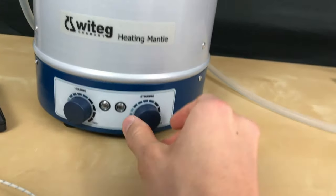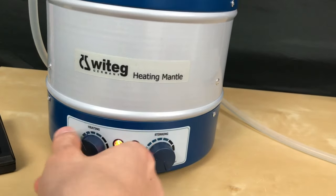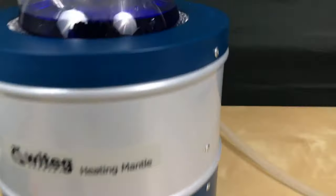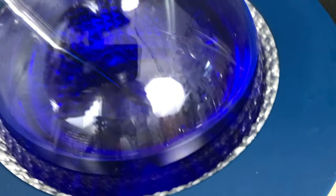We turn up the stirring and the heating. As you can see my anti-freeze has some blue coloring in it and I plan to remove that by distillation.